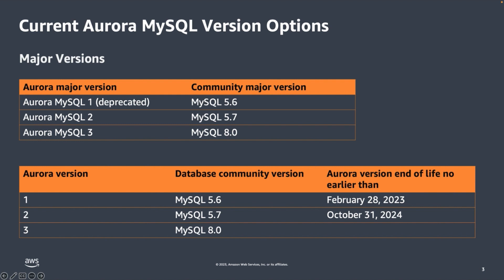Amazon Aurora version 2, which is compatible with MySQL community version 5.7, is set to reach its end of life on the 31st of October 2024. Amazon Aurora version 3, which is compatible with MySQL community version 8.0, is currently available, and the end of life for this version has not been determined yet at the time of this recording. The end of life timelines shown are no earlier than these dates, meaning the dates can be pushed further but deprecation would not happen before them. This can help you initially plan your upgrade timelines before the version reaches its end of life.